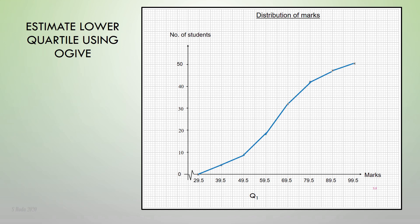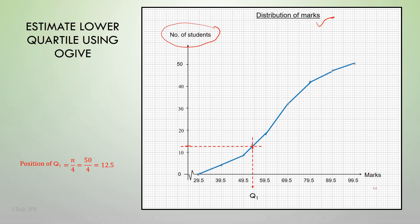Now, how to estimate the lower quartile using an ogive. We use the ogive distribution of marks. To find first quartile, find the position of Q1, which is N divided by 4, giving position 12.5. Locate 12.5 on the number of students axis, draw a horizontal line to the ogive, then draw a vertical line down. That intersection on the x-axis is Q1. Q1 equals lower value 49.5 plus 4 boxes, where 1 box equals 1 mark (class size is 10), so Q1 equals 53.5.